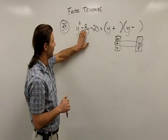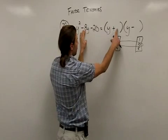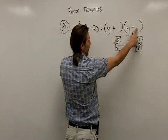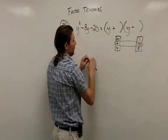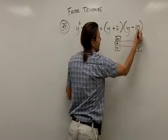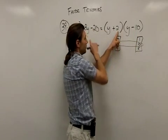Notice I want to end up with a -8 when I add these. If I put the factors a positive 2 here and a -10 there, if I add a positive 2 and a -10, that will give me a -8. So I'm going to put the 2 there and the 10 there. And notice when I add them together, that will give me a -8 for my middle term.